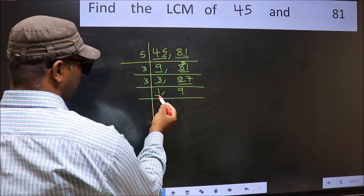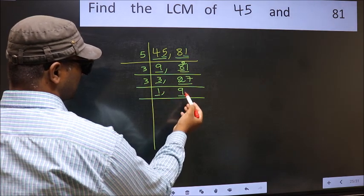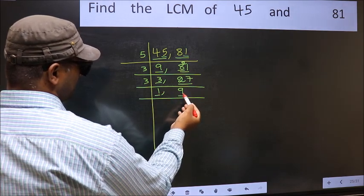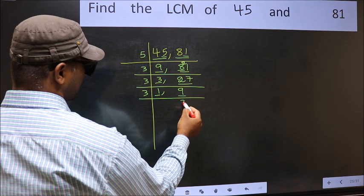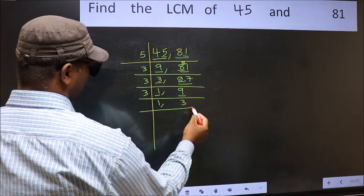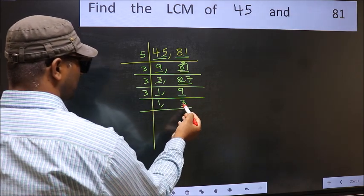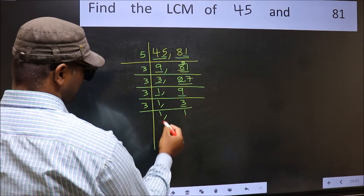We got 1 on the left side, so focus on the next number, 9. In the 3 times table, 3 threes are 9, so 9 divided by 3 is 3. Now 3 is a prime number, so 3 divided by 3 gives 1.